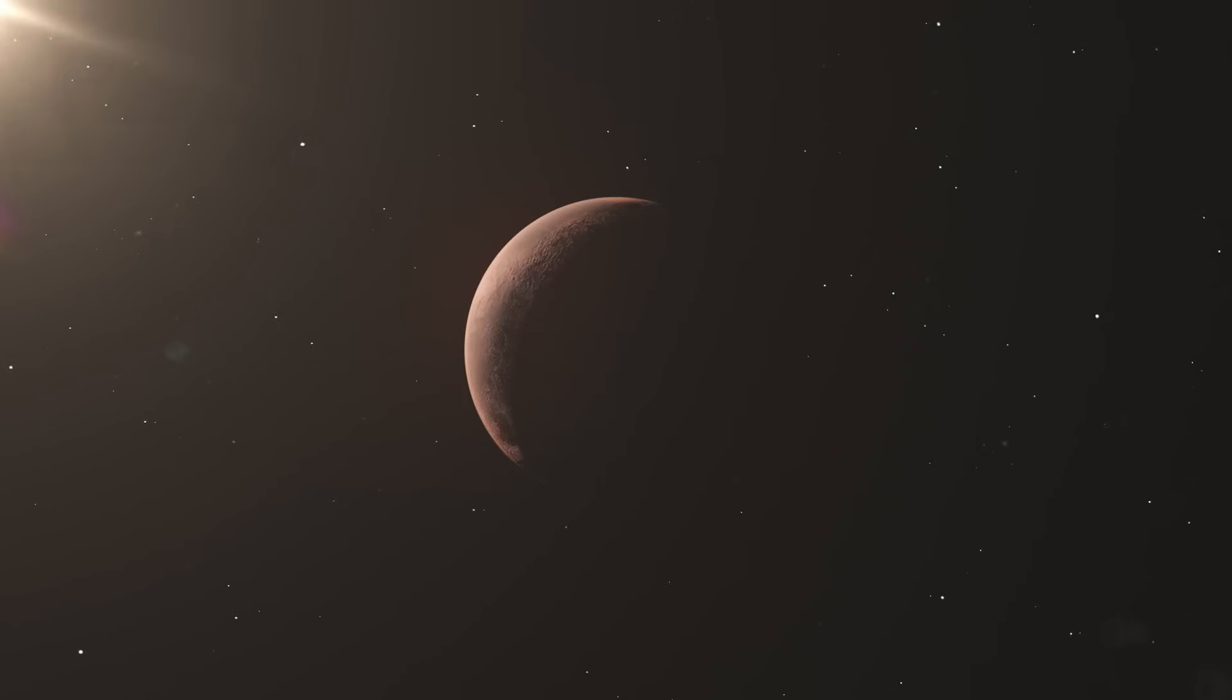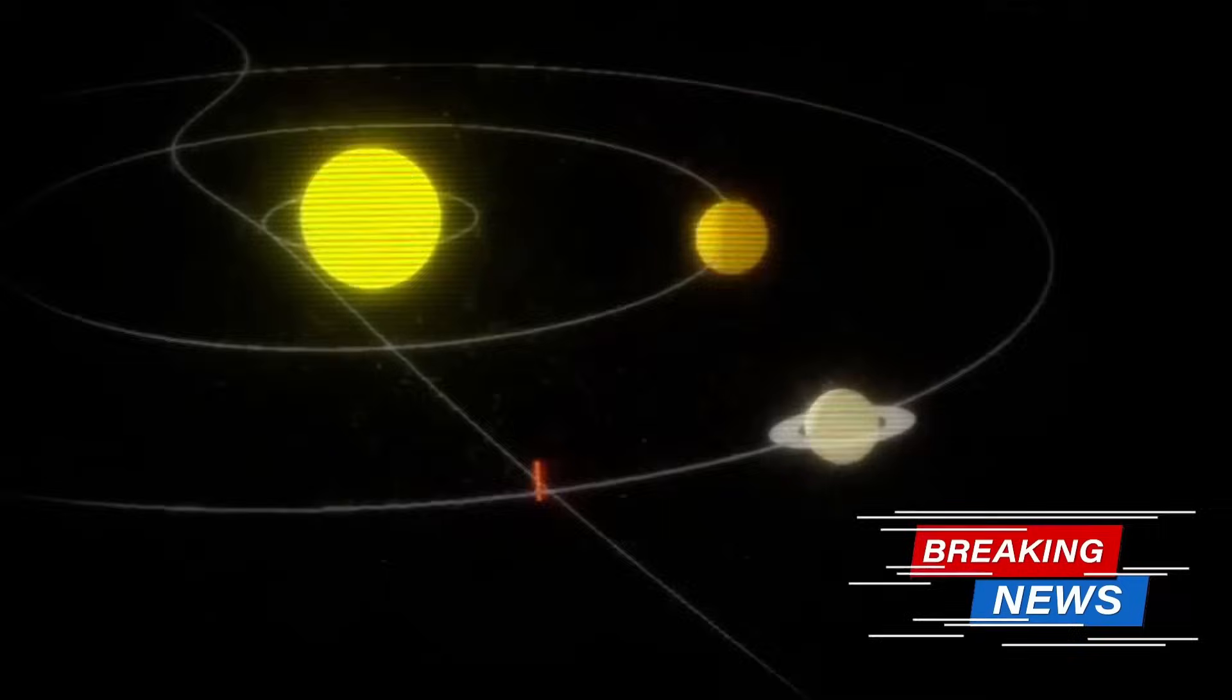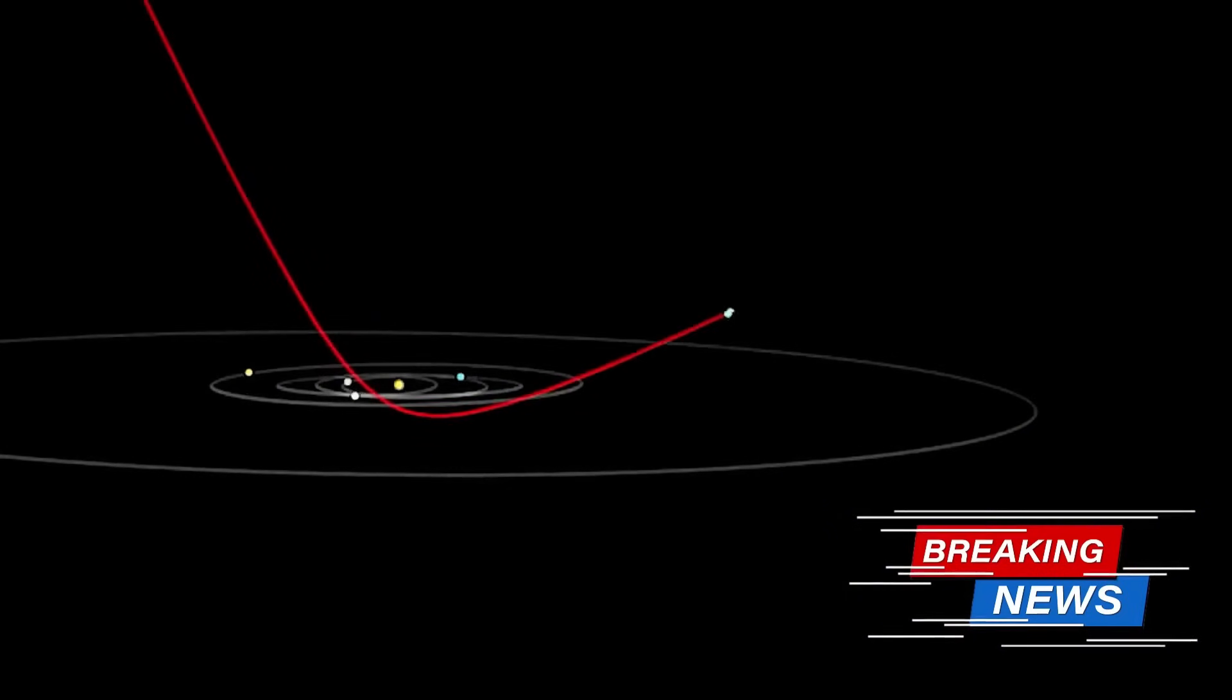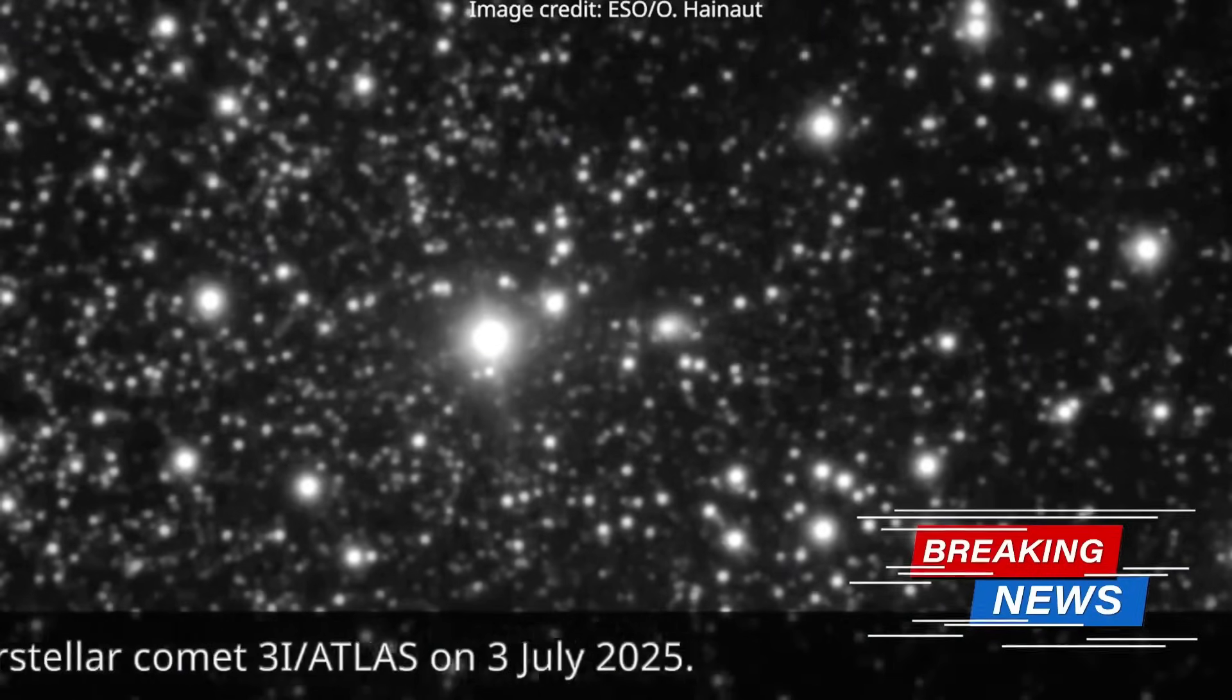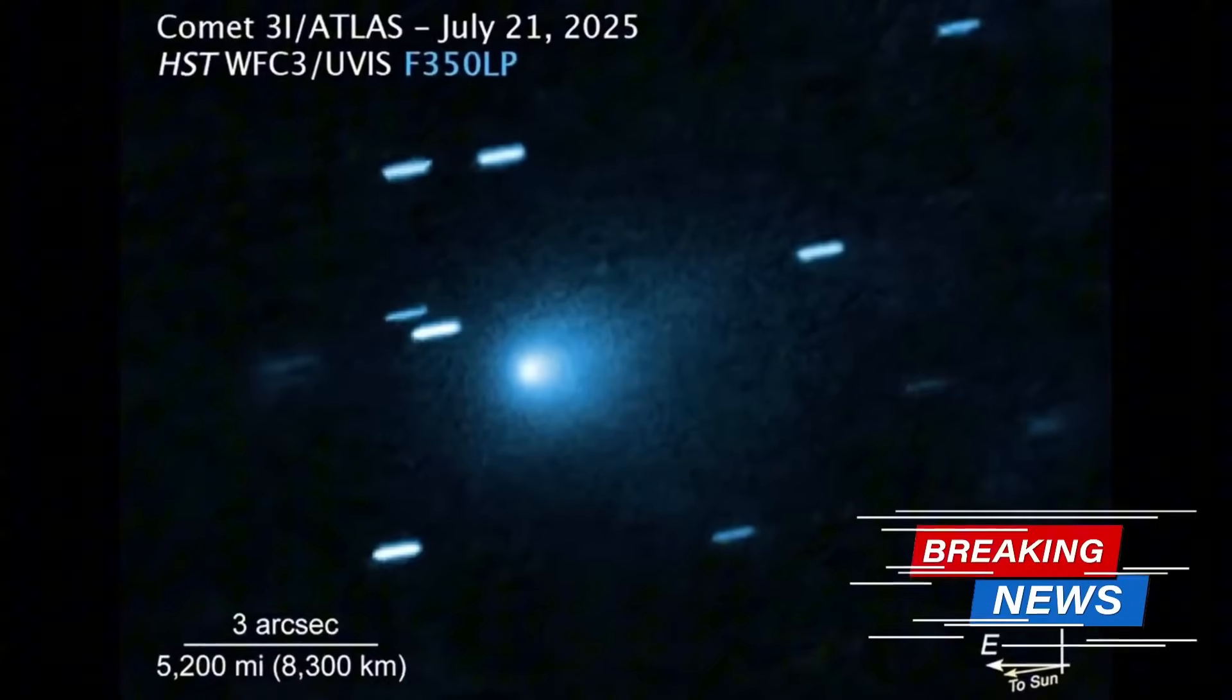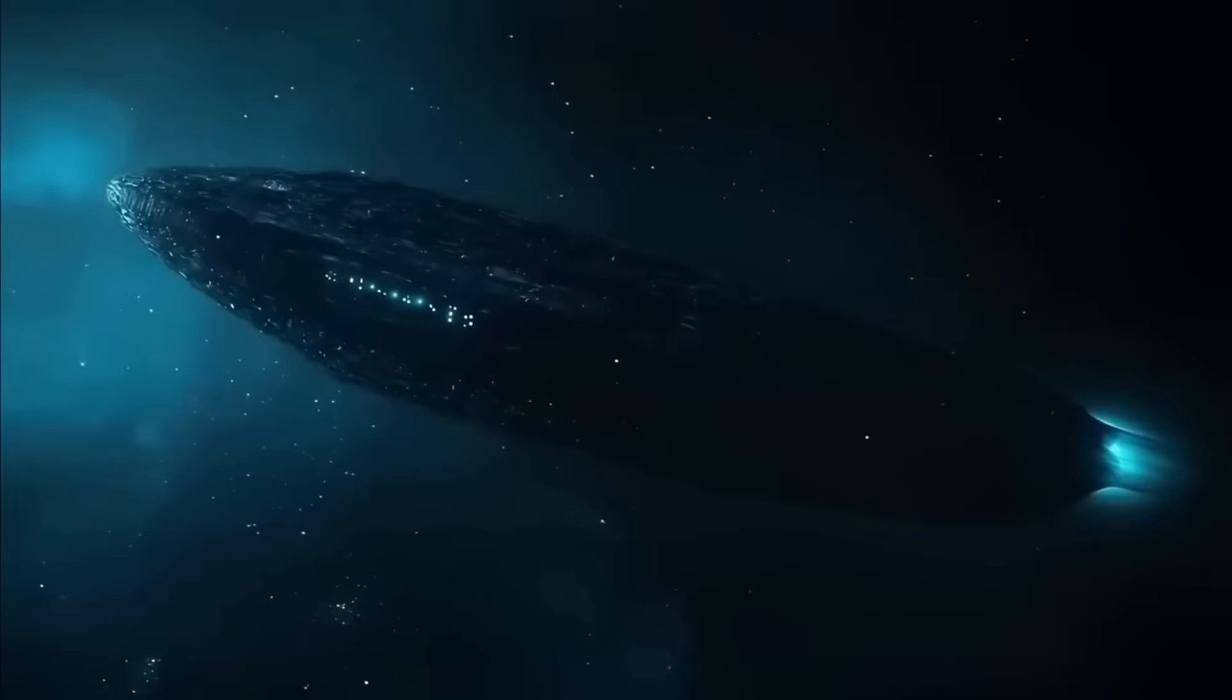After tonight's closest approach, object continues outward. Trajectory carries away from Earth, away from inner solar system toward outer reaches, toward Jupiter encounter March 2026. Close approach to gas giant. Gravitational interaction inevitable. Trajectory modification expected. Slight deflection probable. Capture unlikely but possible. Collision extremely improbable but not impossible. Jupiter's massive gravity will alter path, will change velocity, will modify orbit slightly. And people will notice. Will claim trajectory change proves artificial control, proves propulsion system, proves intelligent guidance. But physics explains everything.